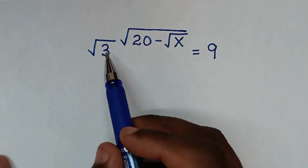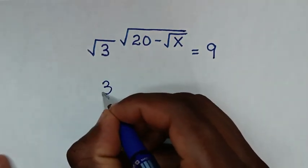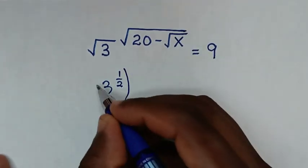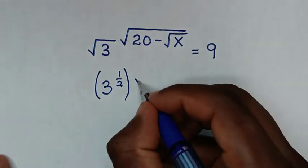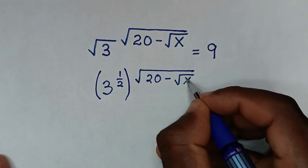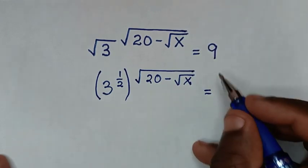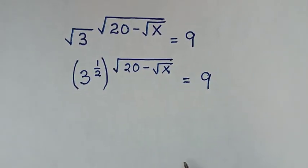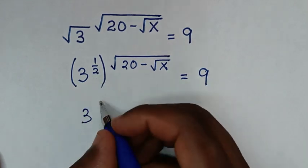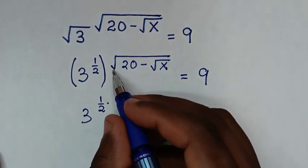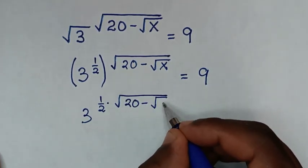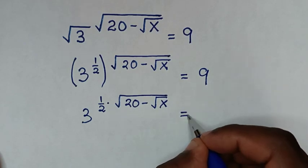In the first step, the square root of 3 is the same as 3 to the power of one half. So the expression becomes 3 to the power of one half, with that bracket raised to the power of (√20 minus √x), equal to 9.